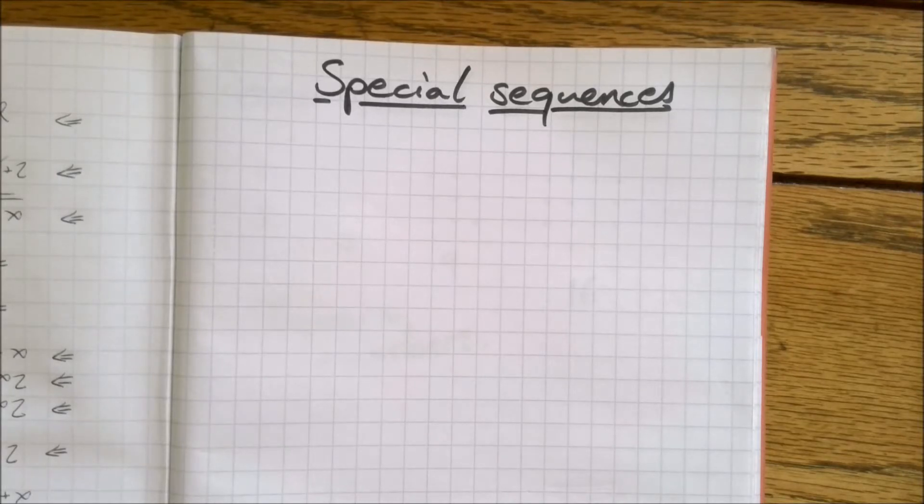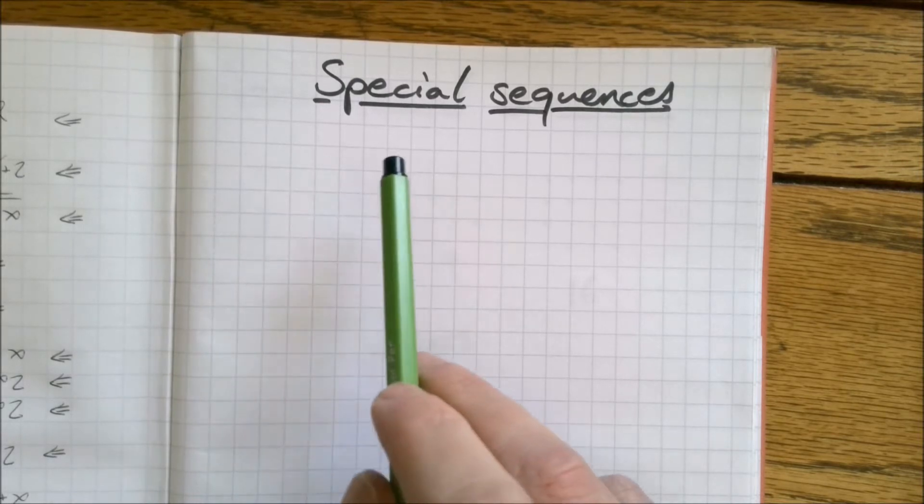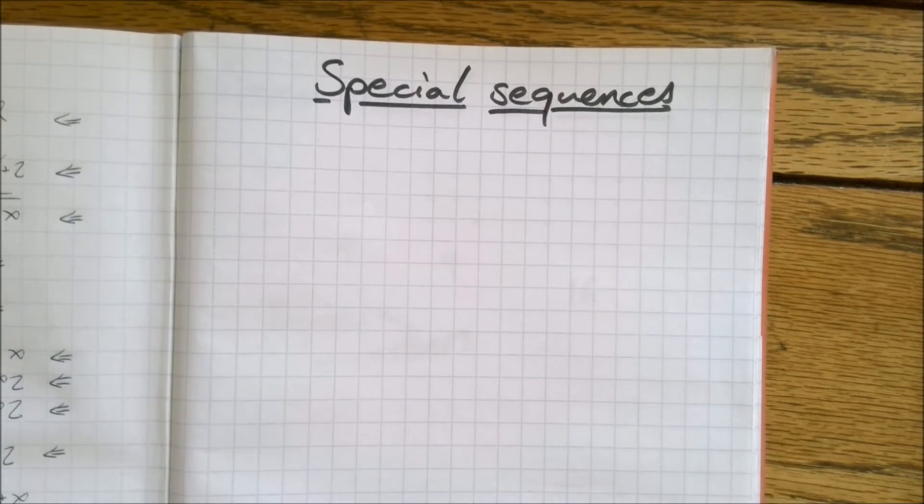We quite regularly talk about number sequences in lessons. Most of these sequences we might just make up and they don't have their own names, but some crop up a lot and they're so special that they get their own names. We need to learn about these for our GCSEs and we're going to go through some of them now.